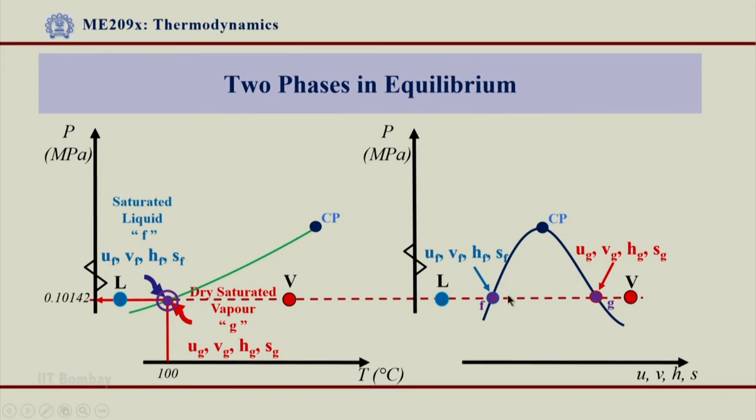The point to be noted is in the steam table now we will have values for saturated liquid region giving as f as subscript, and will have properties at saturated gas region with the subscripts of g.